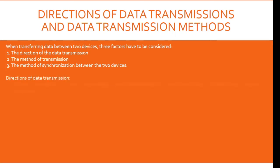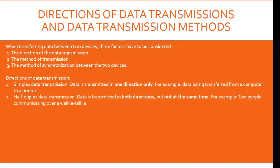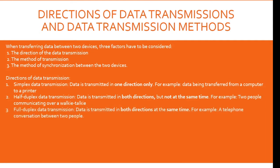Directions of data transmission. Number one, simplex data transmission — data is transmitted in one direction only. For example, data being transferred from a computer to a printer. Number two, half-duplex data transmission — data is transmitted in both directions but not at the same time. For example, two people communicating over a walkie-talkie. Number three, full-duplex data transmission — data is transmitted in both directions at the same time. For example, a telephone conversation between two people.